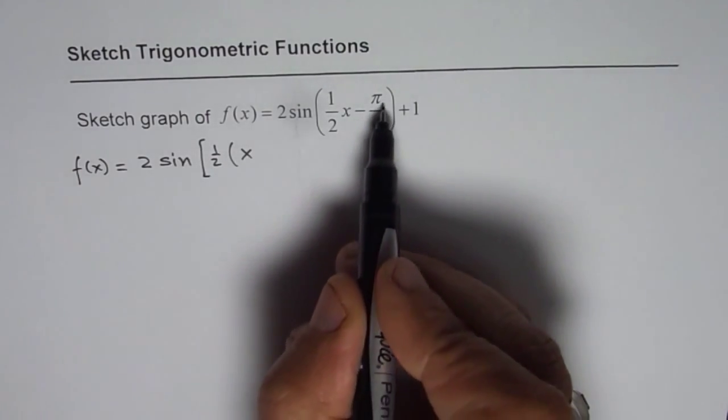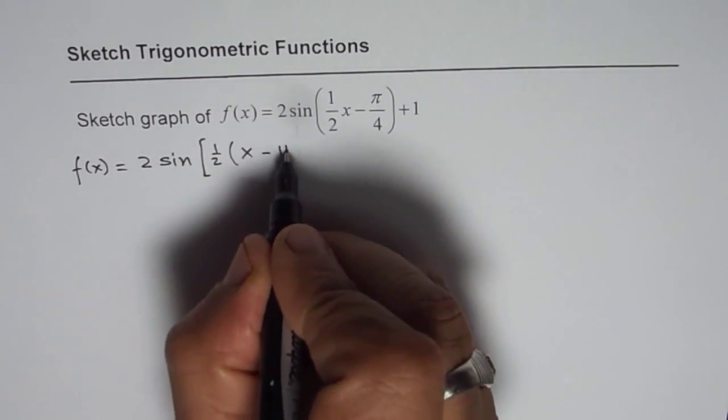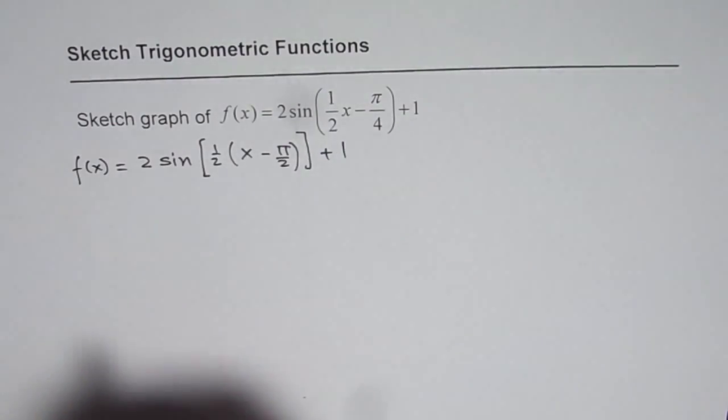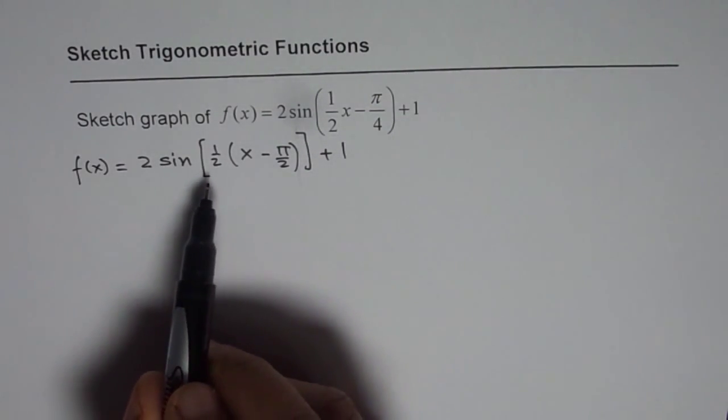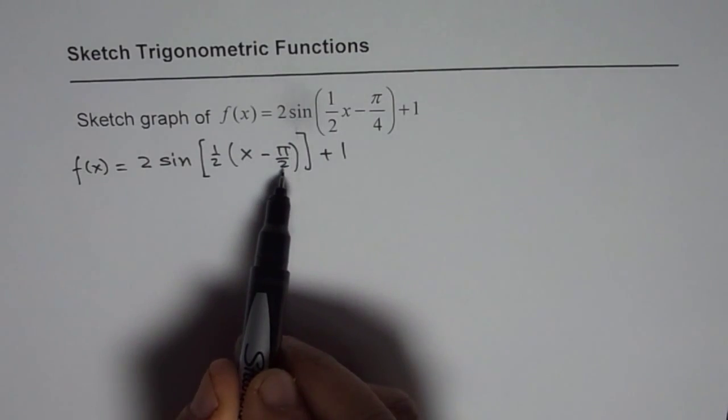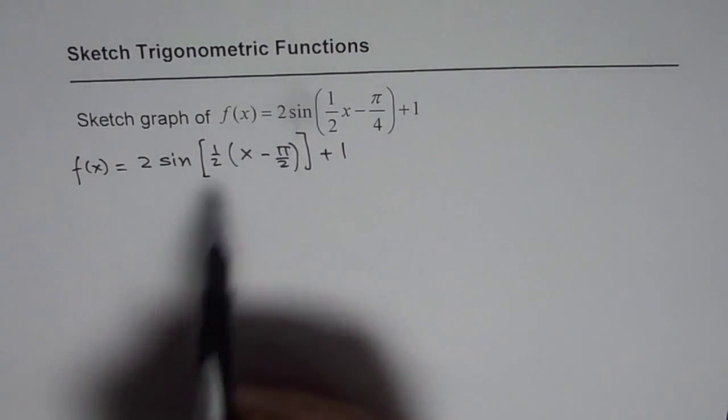When you factor half out you have to multiply by 2, so you get minus pi by 2 here plus 1. Now if you have a doubt you should actually expand and check. When you multiply half by x you get half x. When you multiply half by minus pi by 2 you get pi by 4. So that is perfect.